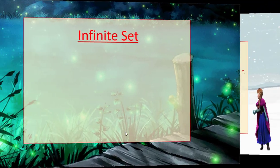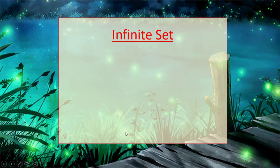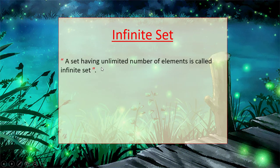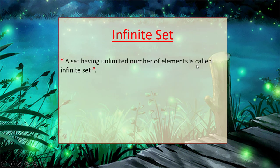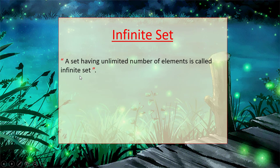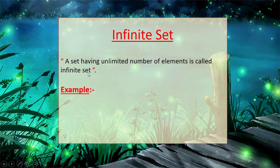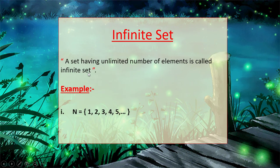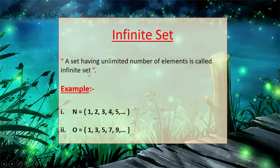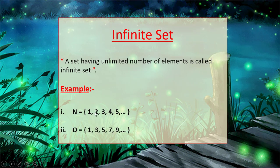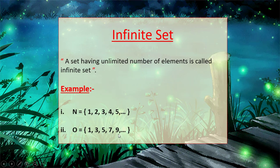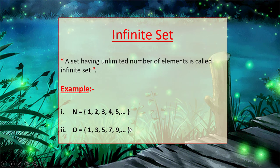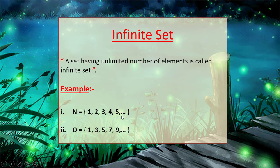Infinite set: a set having an unlimited number of elements is called an infinite set. For example, the set of counting numbers N and the set of odd numbers O are infinite sets, because these sets have an unlimited number of elements.